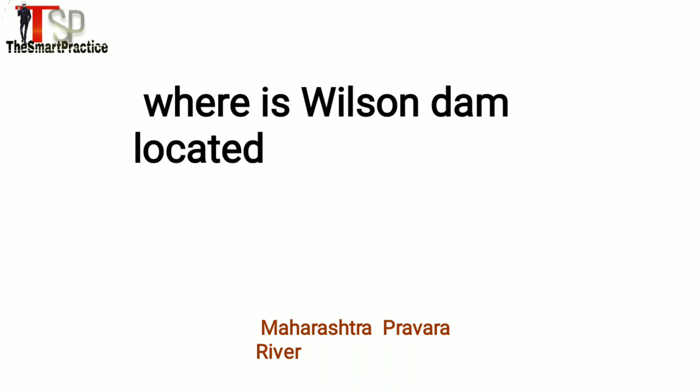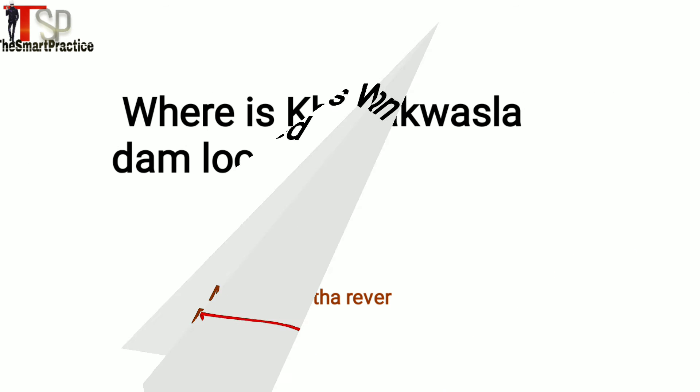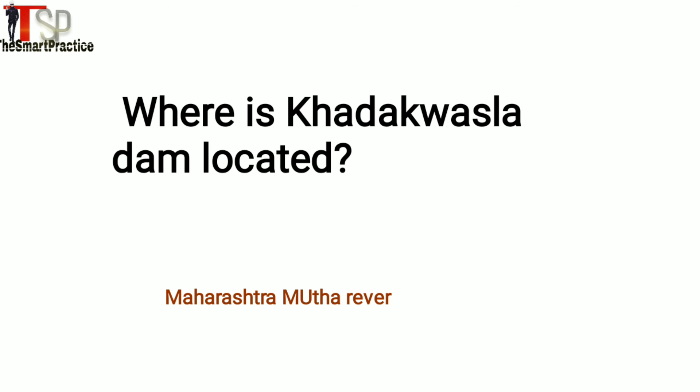Where is Wilson Dam located? Maharashtra, Prabhara river. Where is Khadakwasala Dam located? Maharashtra, Muthar river.